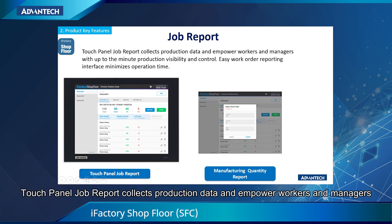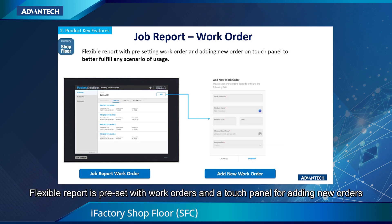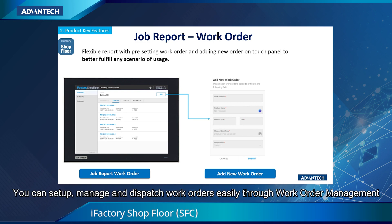The touch panel job report collects production data and empowers workers and managers with up-to-the-minute production visibility and control. The easy work order report interface minimizes operation time. A flexible report is preset with work orders and a touch panel for editing new orders. It also has the function of creating work orders for production supervisors. You can set up, manage, and dispatch work orders easily through work order management.